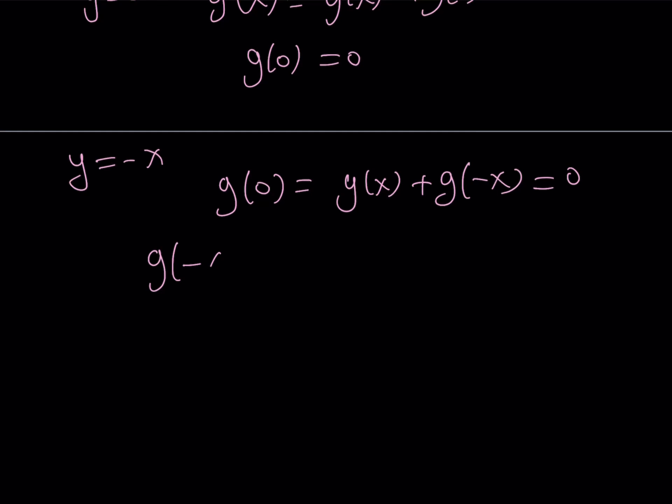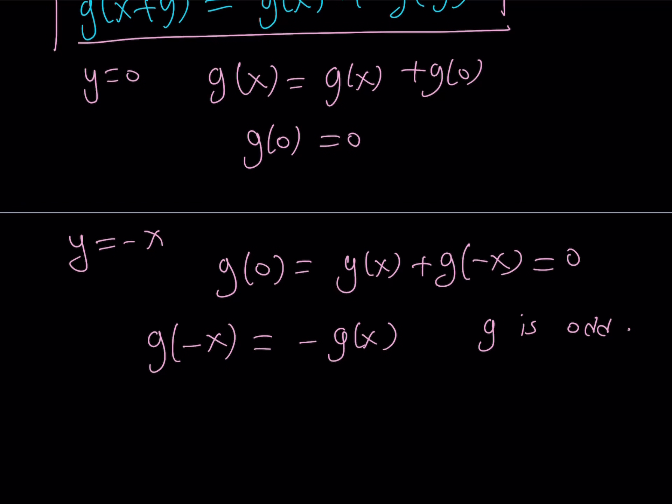From here, we get g of negative x equals negative or the opposite of g of x. This tells you that g is an odd function, because that's what odd functions do. So this quick observation shows us that g is odd, g of 0 is equal to 0.